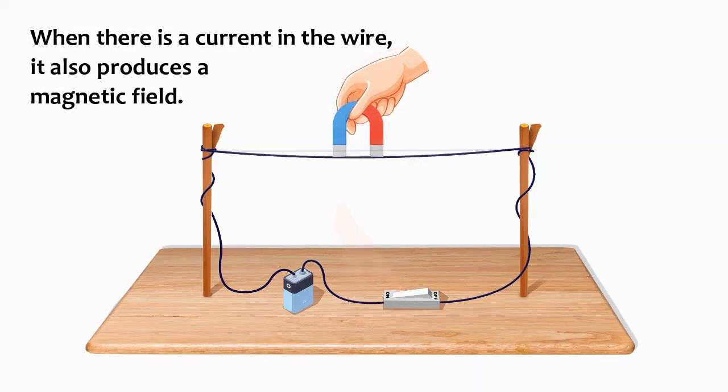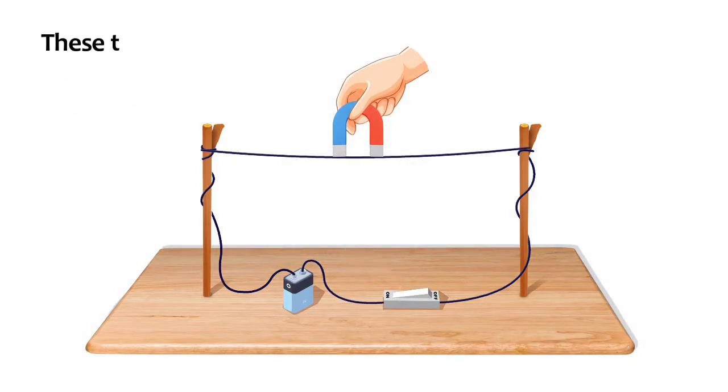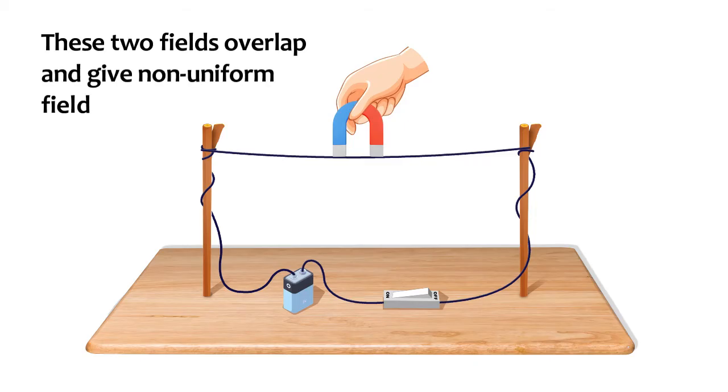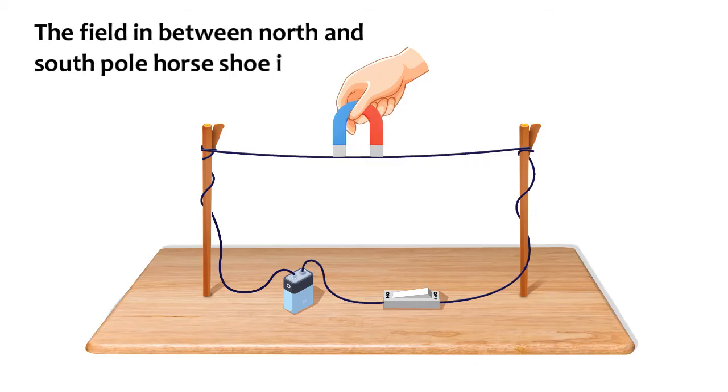When there is a current in the wire, it also produces a magnetic field. These two fields overlap and give a non-uniform field. The field between the north and south poles of the horseshoe is shown in the figure.